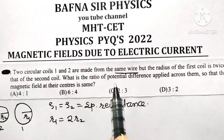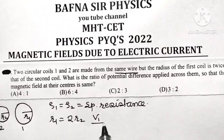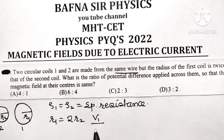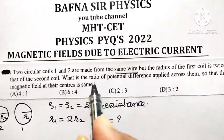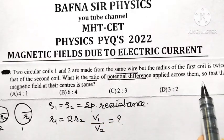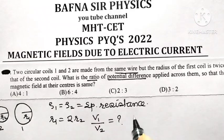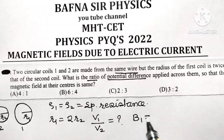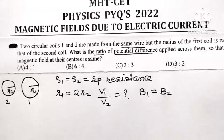Then what is the ratio of potential difference? V1 is the potential difference applied across the first coil, and V2 is the potential difference applied across the second coil. What is the ratio of potential difference applied across the two coils so that the magnetic field at their centers are same? B1, the magnetic field at the center of the first coil, must equal B2, the magnetic field at the center of the second coil.